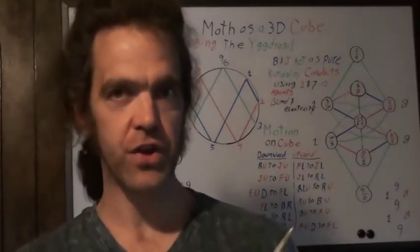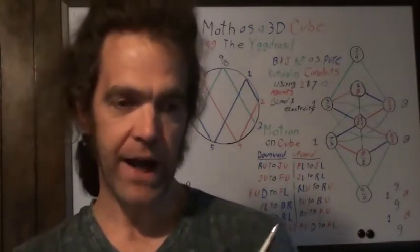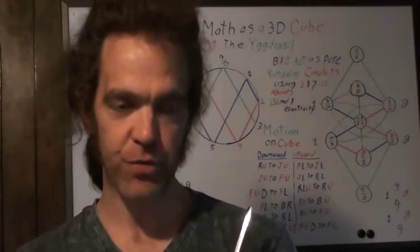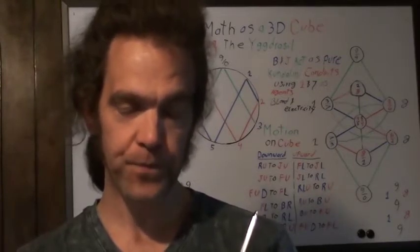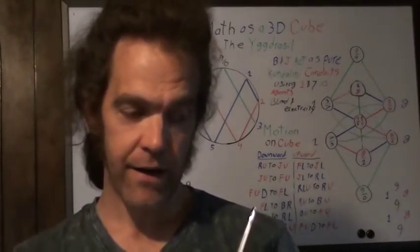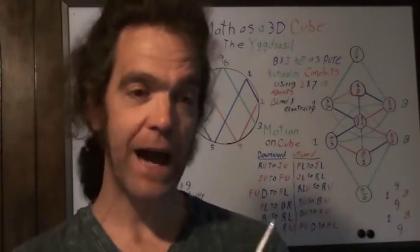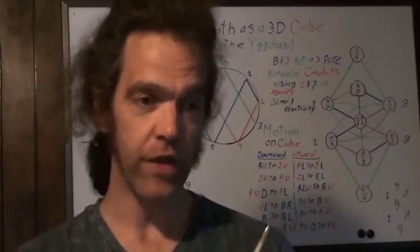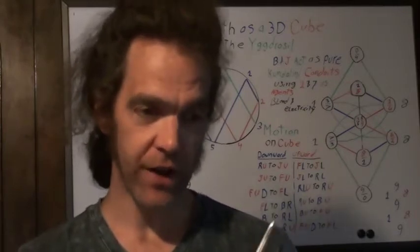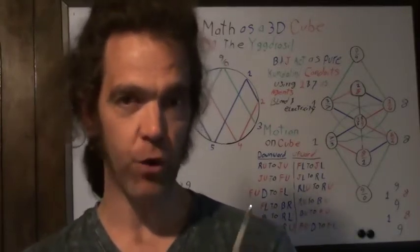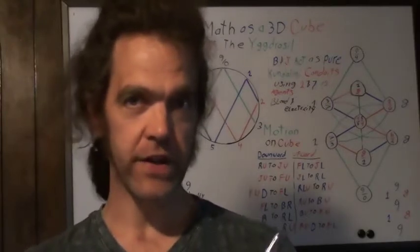Yesterday I made a video called Vortex Math and the Cube of Lord Osseron, but that's a 2D structure. Today I'm applying the same vortex math principles to the 3D cube, which just happens to be the Nordic Yggdrasil. The Yggdrasil is actually the 3D vortex math cube.